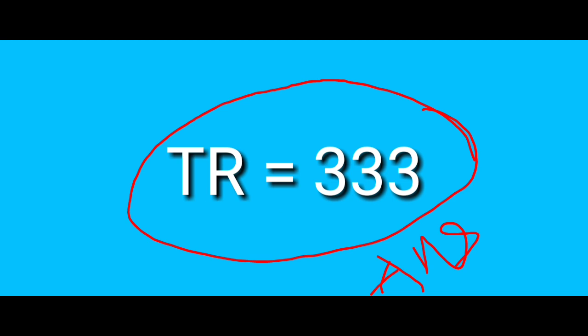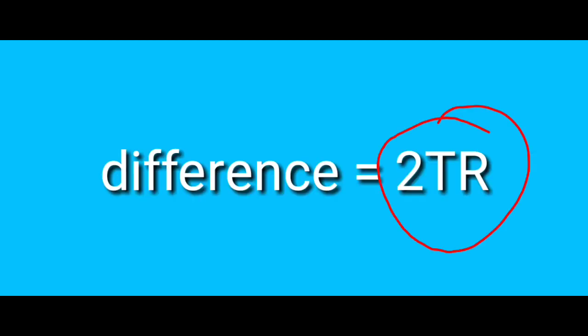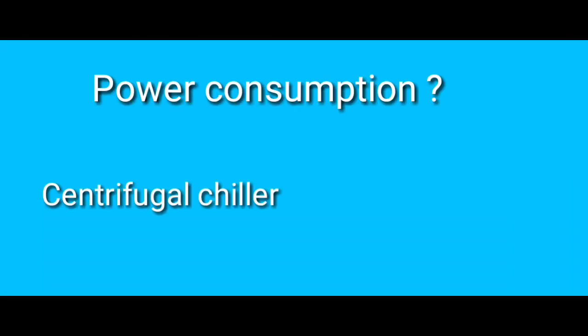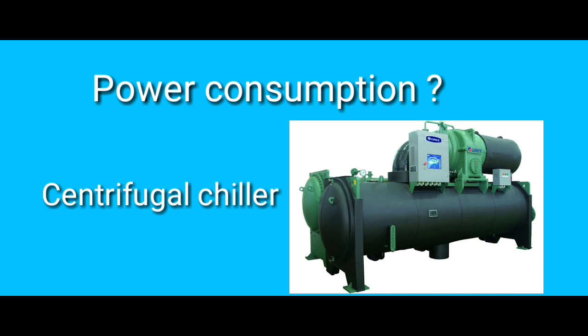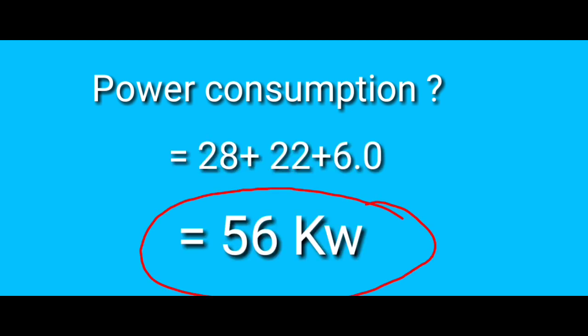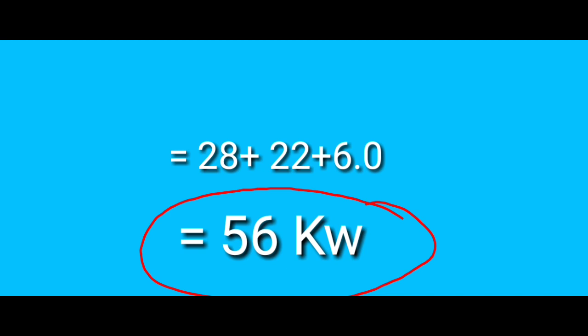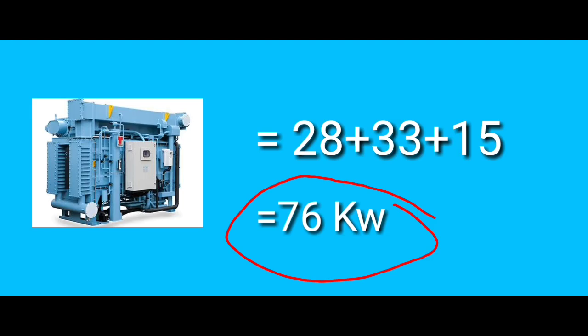We are going to find out the auxiliary power consumption for centrifugal chillers. That power is equal to 28 plus 22 plus 6.0, which equals 56 kW. When you see the power consumption, it is equal to 76 kW — same TR rating with a maximum 2 TR variation, but power consumption difference is 20 kW.